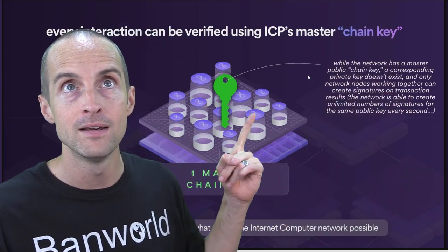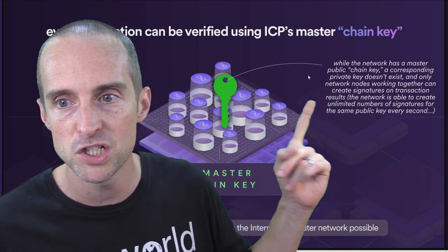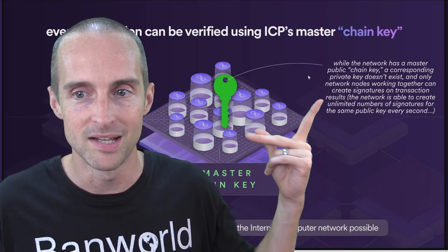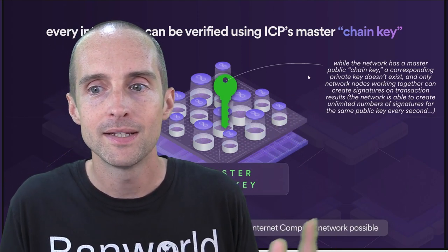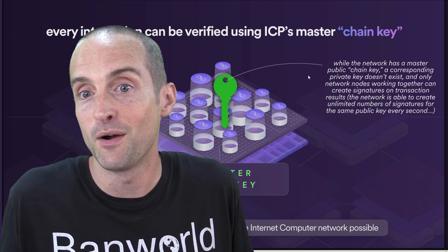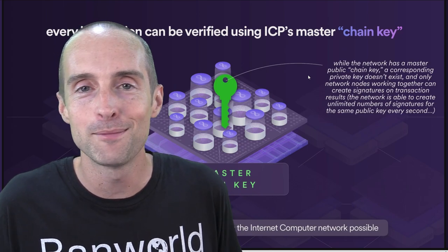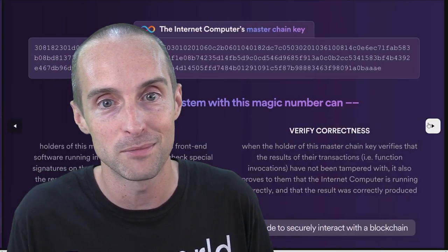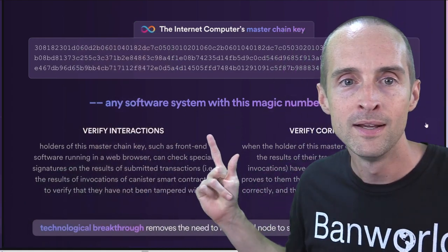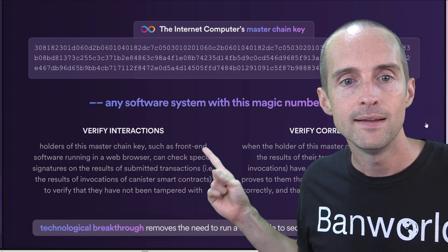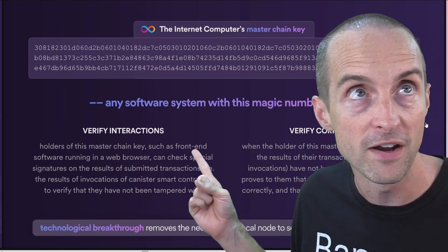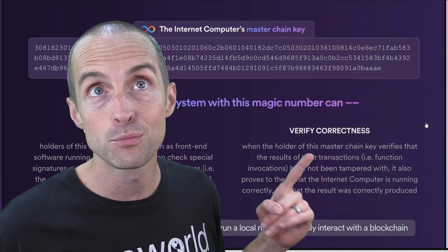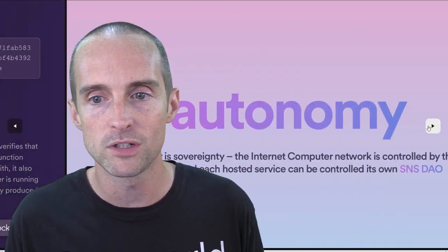Everything can be verified using ICP's master public chain key. There's a corresponding private key that doesn't even exist — only the nodes working together can create transaction signatures. When you have Internet Computer's master chain key, any software system with this number can verify that transactions are working correctly and haven't been tampered with. That's really important for letting everyone collaborate and work together more efficiently.